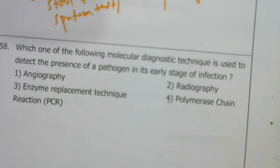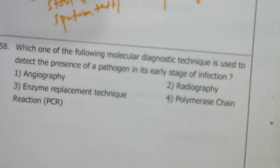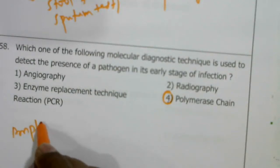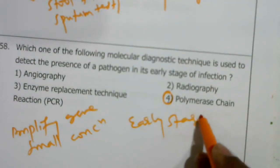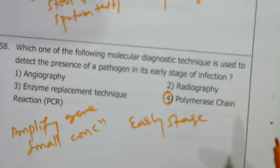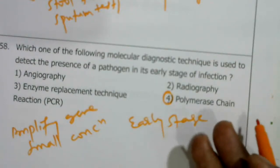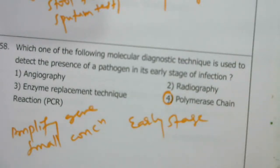The molecular diagnostic technique used to detect the presence of a pathogen at an early stage of infection is PCR — polymerase chain reaction. In PCR we can amplify a gene even if it is present in small concentration and detect it at an early stage. PCR is used in DNA fingerprinting, to detect mutations, genetic diseases, and HIV infection.